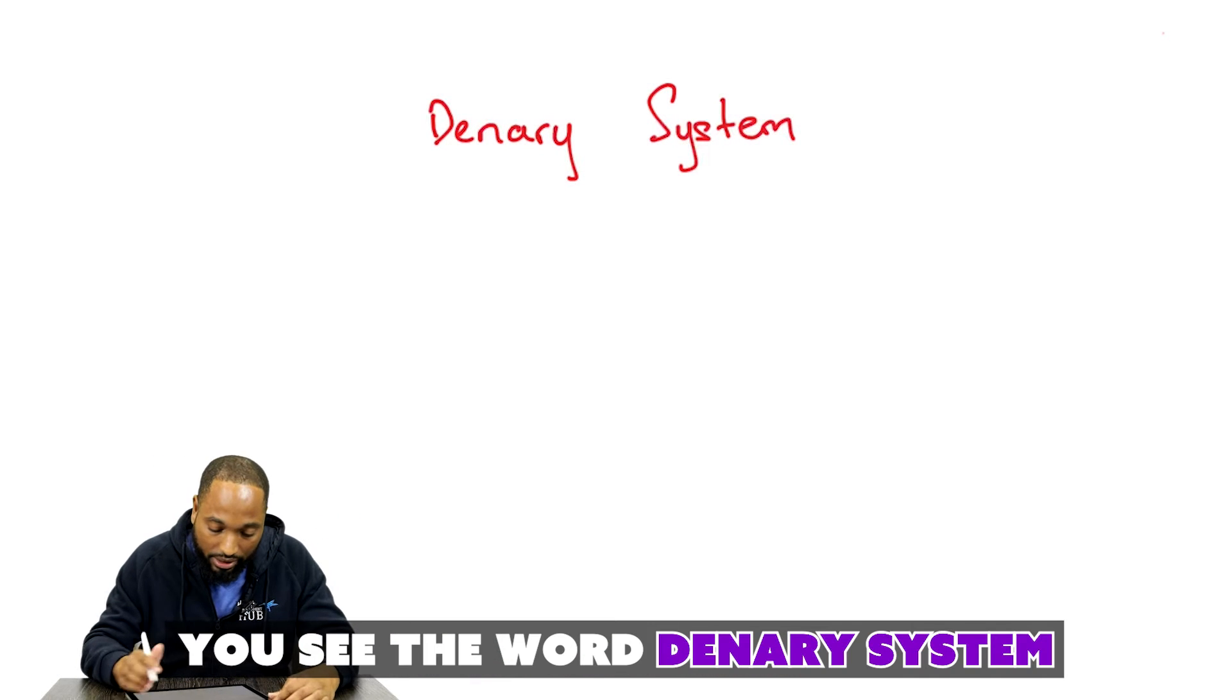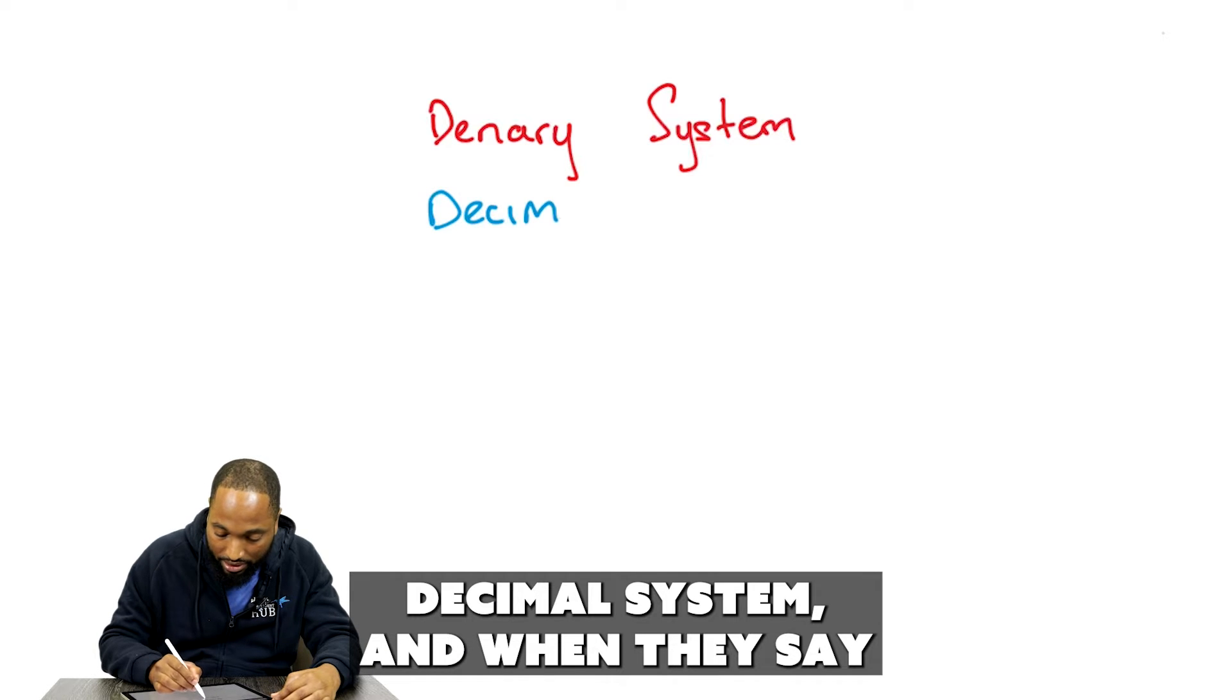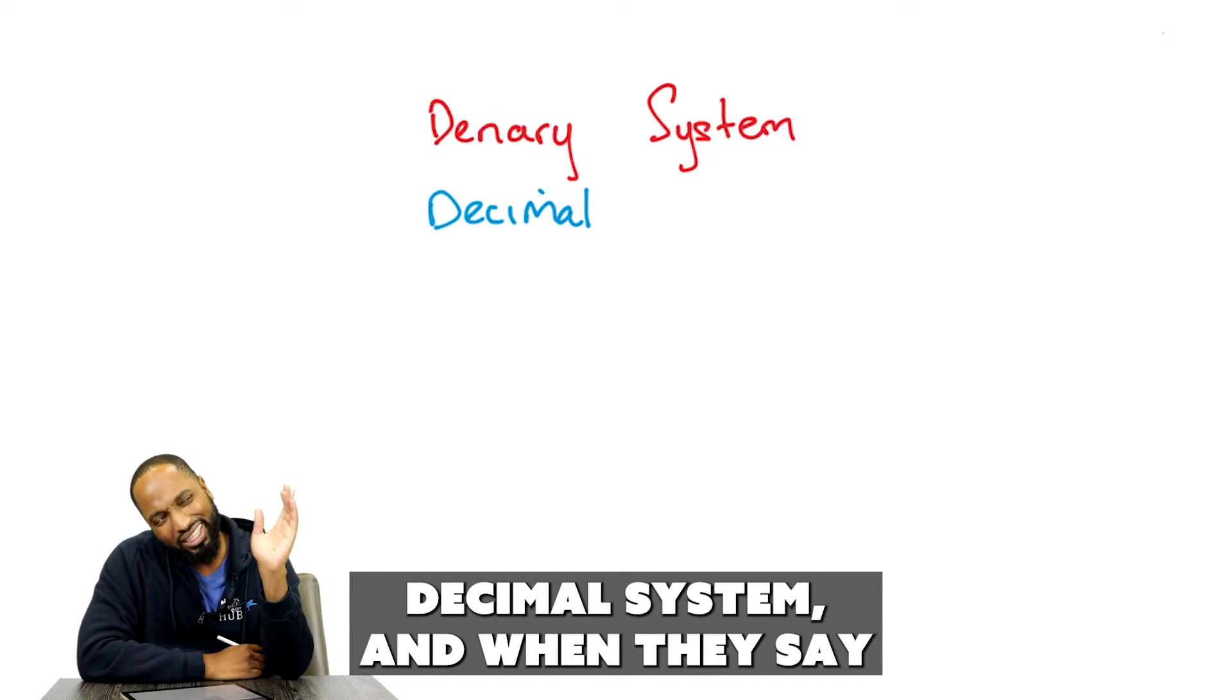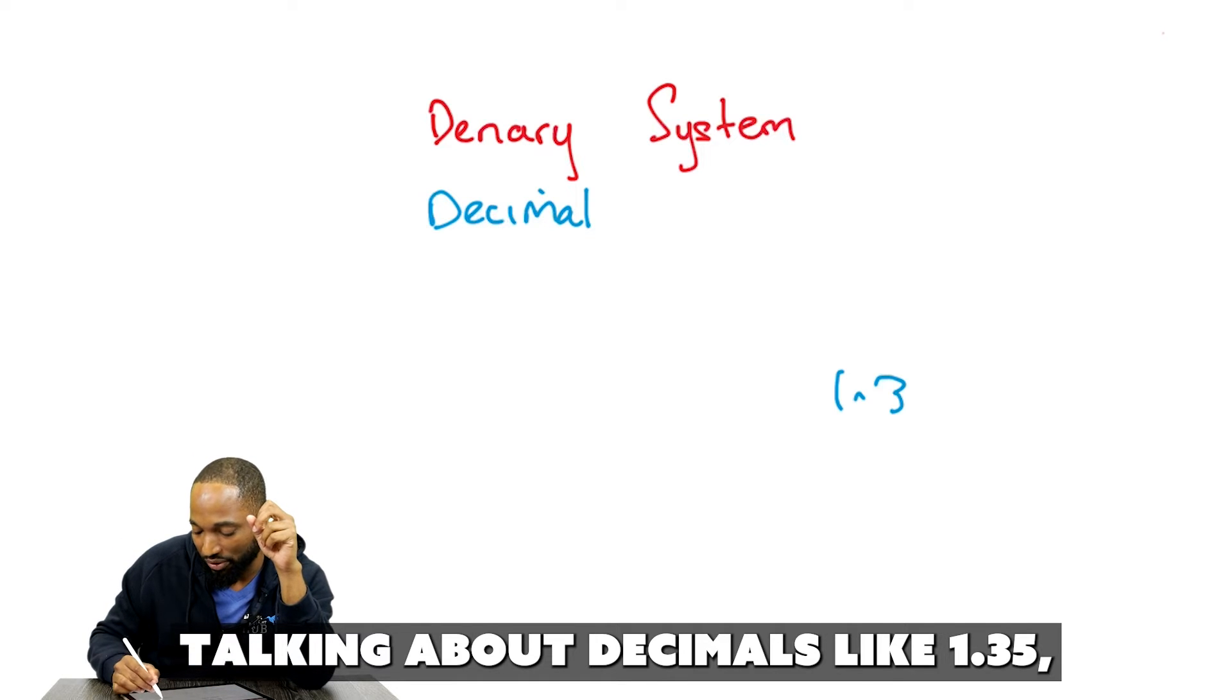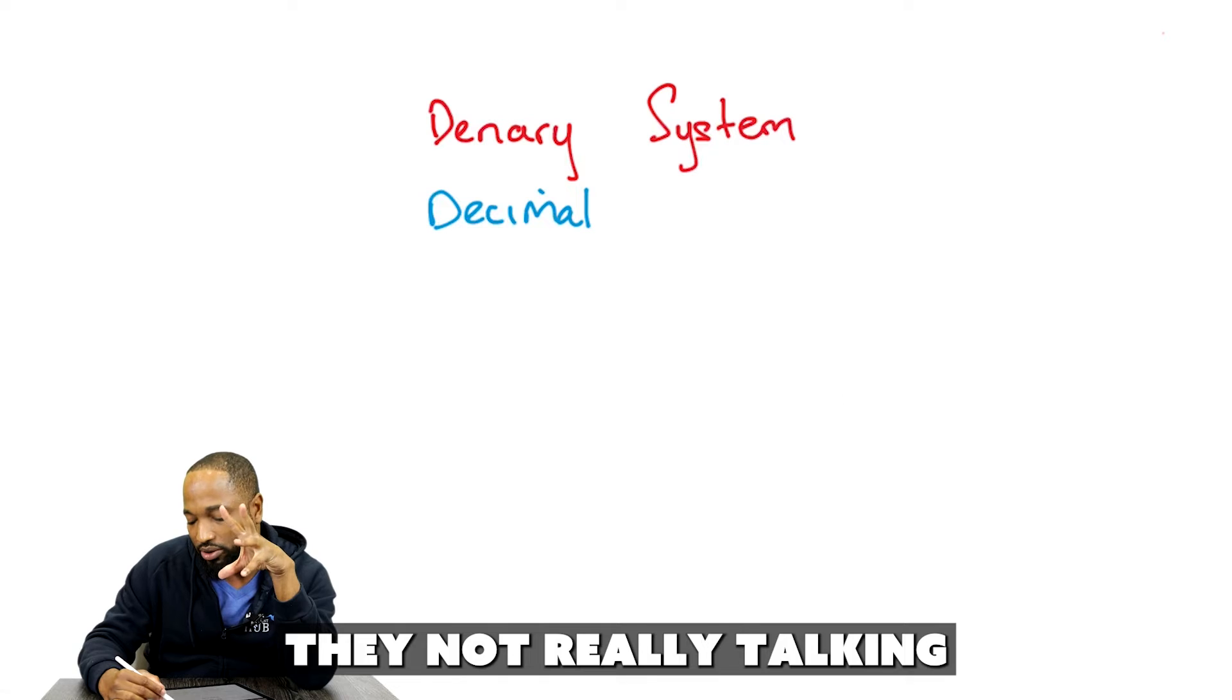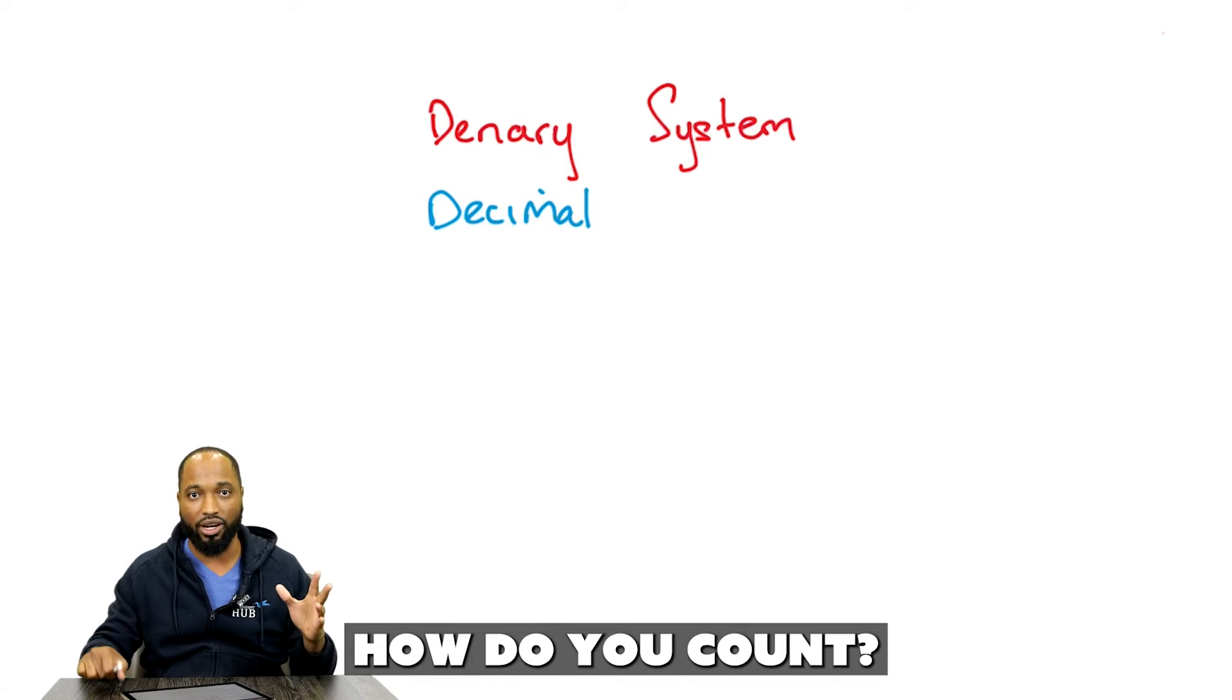So, on the board you see the word denary system. Sometimes you may see decimal system. And when they say decimal system here, they are not really talking about decimals like 1.35, that's a decimal number. They are not really talking about that particularly. They are talking about the system that we count in. How do you count?